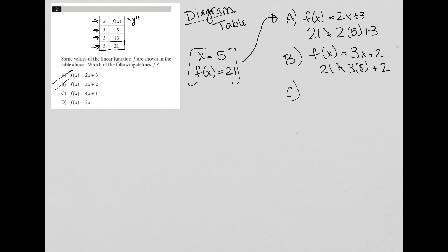And you can see, right, eventually we're going to get to our right answer here. So let's just go a little bit faster. 4x plus 1. So 21 equals 4 times 5 plus 1. And that is definitely true, right? 4 times 5 is 20 plus 1 is 21. So C must be the correct answer.